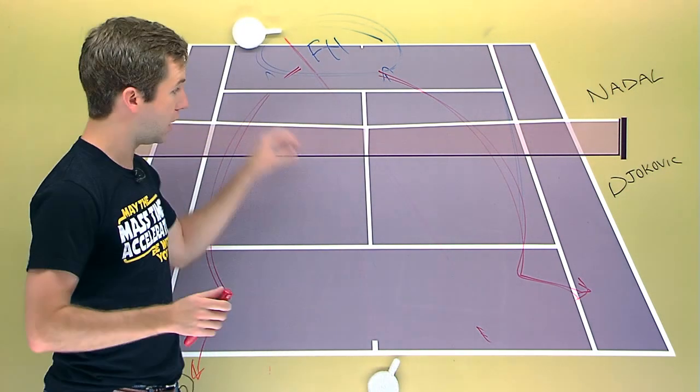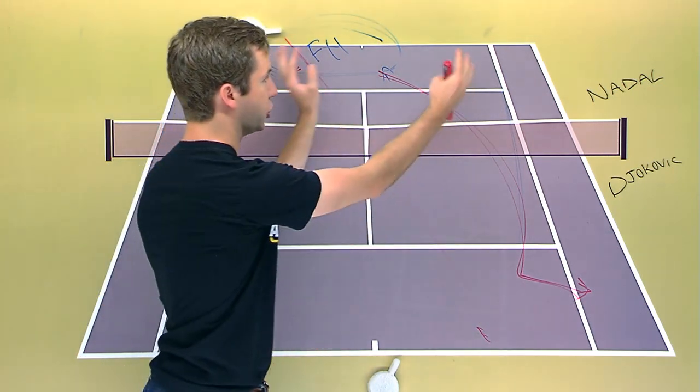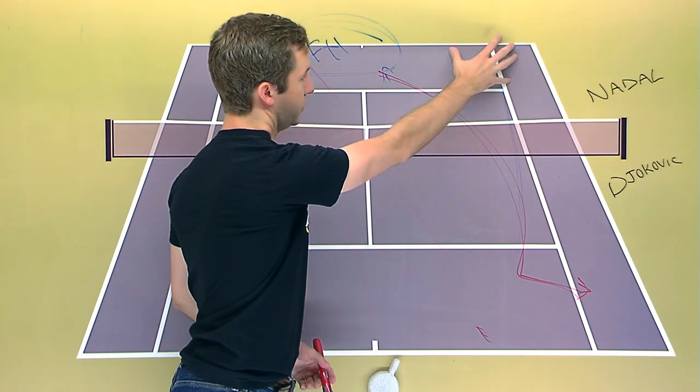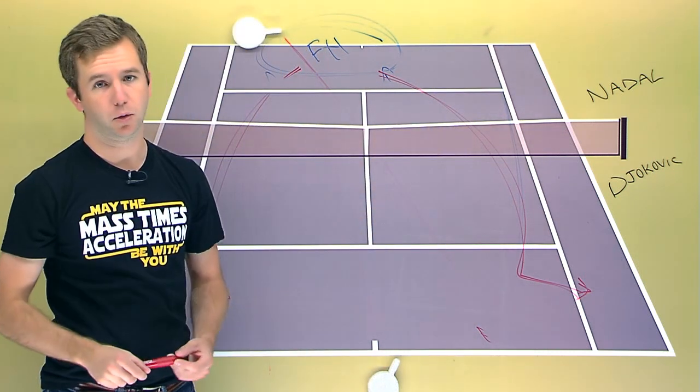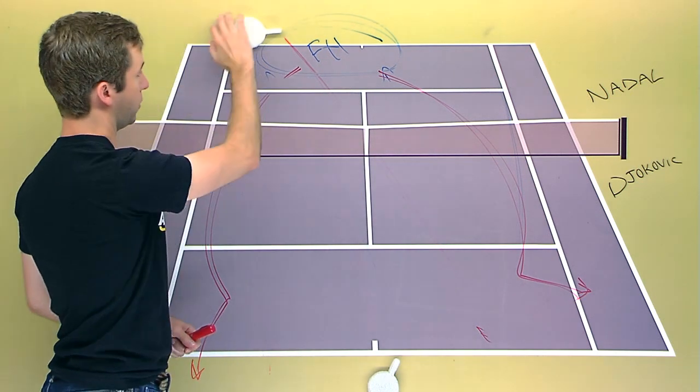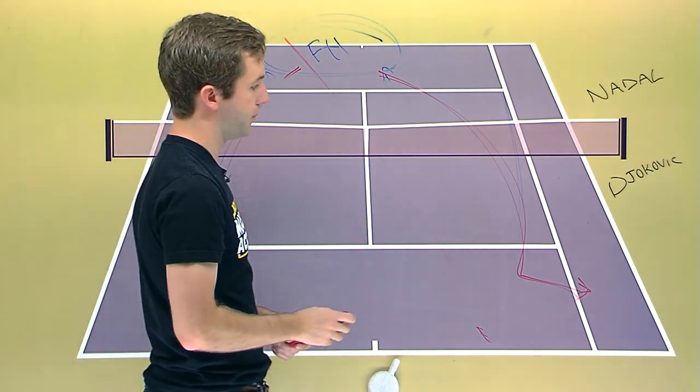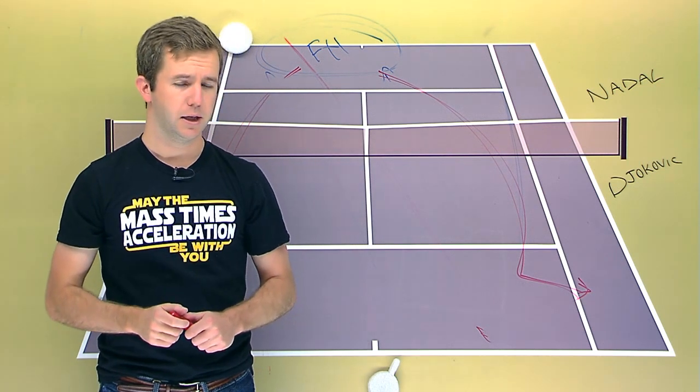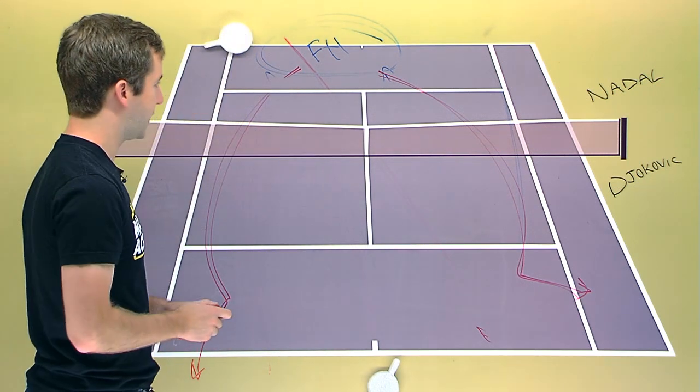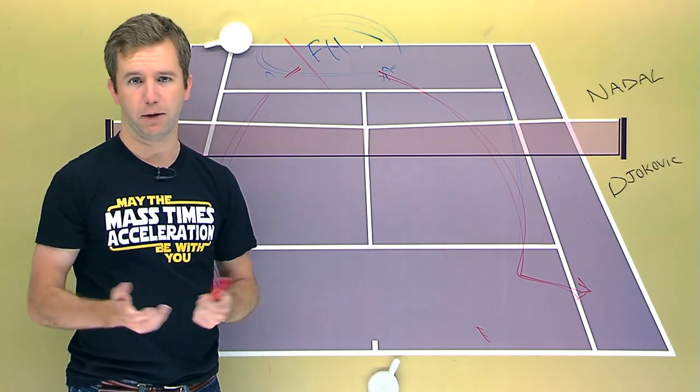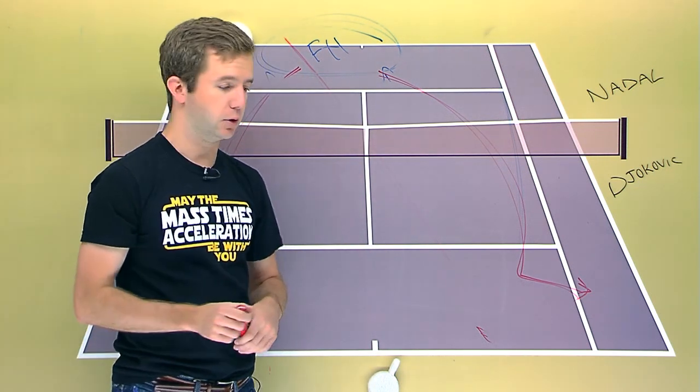Again, if he can pull off the high-quality backhand, that kind of shrinks the court that Djokovic can work with. If he doesn't hit a good backhand, then Djokovic can be able to go down the line quite frequently or just hit a quality forehand cross-court, which will force a backhand. So it's a little bit more of a high-risk play there. But I think, again, if the down-the-line backhand exchange isn't working out for Nadal, that would be the first adjustment I would look for.